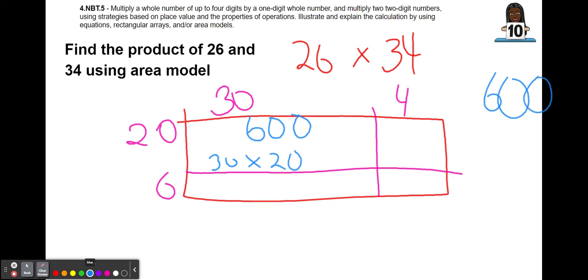Next, we're going to multiply 30 times 6. 30 times 6 will have one zero and 3 times 6 is 18. So now we're going to add those total products off to the side.